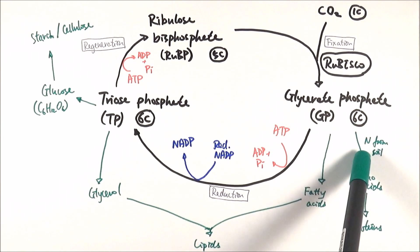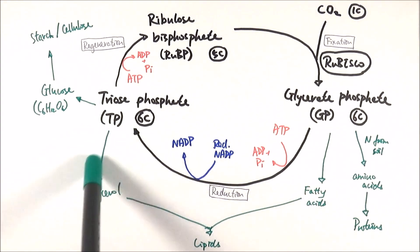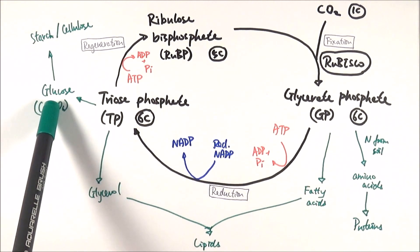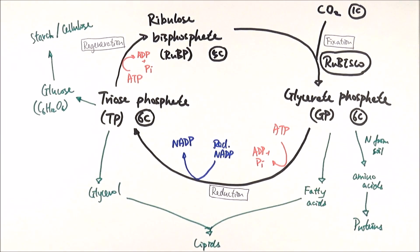Glycerate phosphate can be added with nitrogen from the soil to make amino acids to make proteins. It can also be converted into fatty acids combined with glycerol from TP to make lipids, things like triglyceride and phospholipids. TP can also be converted into hexose sugars, for example, glucose to make starch or cellulose.